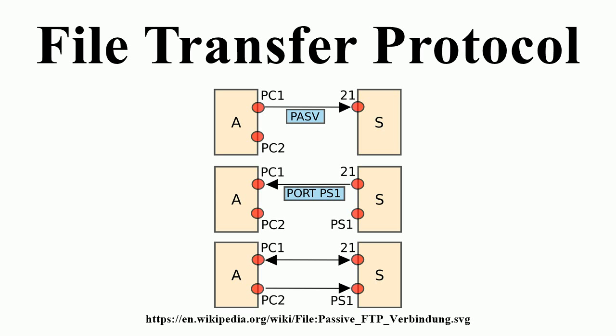FTP may run in active or passive mode, which determines how the data connection is established. In both cases, the client creates a TCP control connection from a random, usually unprivileged, port N to the FTP server command port 21. In active mode, the client starts listening for incoming data connections from the server on port M, and sends the FTP command PORT M to inform the server on which port it is listening. By default, M equals N. The server then initiates a data channel to the client from its port 20, the FTP server data port.